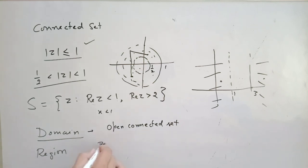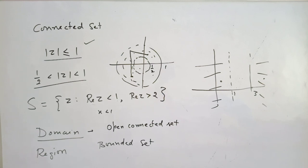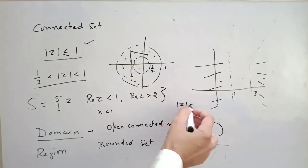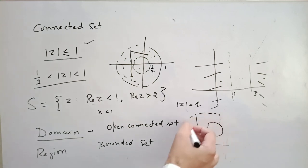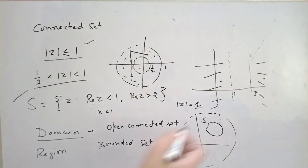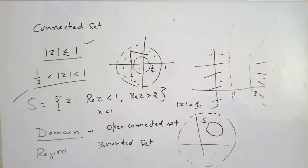A bounded set is one that can be enclosed within a circle of finite radius. If however large a circle you draw you cannot enclose the set, then it is unbounded. For example, the disk |z| < 1 is bounded, but the half-plane Re(z) < 1 is unbounded because no circle of finite radius can enclose it.